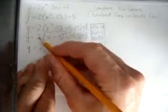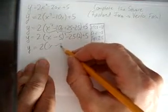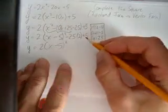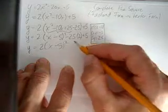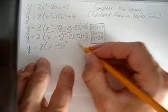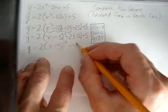And we're almost done. We have the 2 in front, we have x minus 5 squared, and the last thing is just to simplify. Minus 25 times 2 is negative 50. And negative 50 plus 5 gives you negative 45.